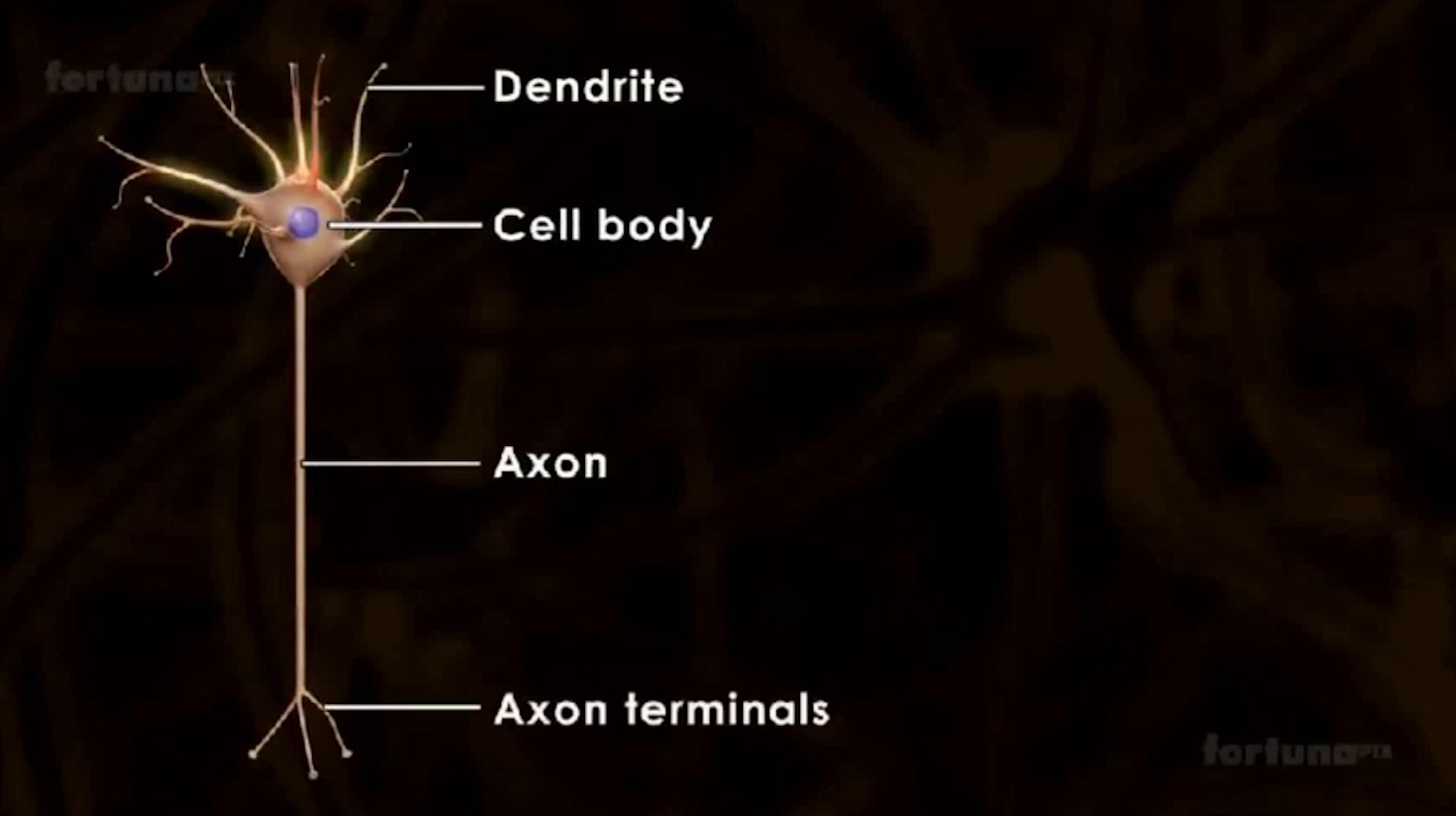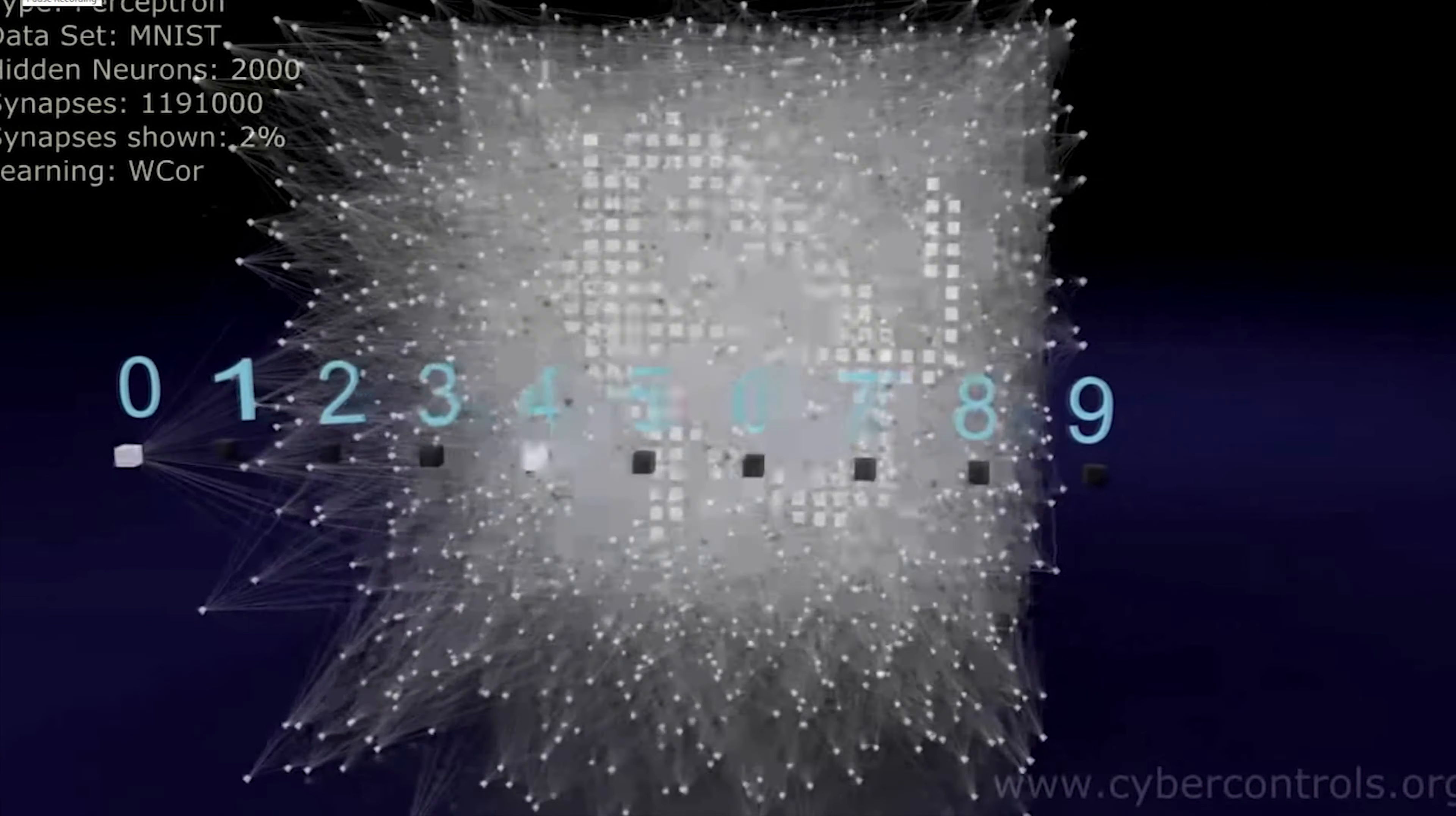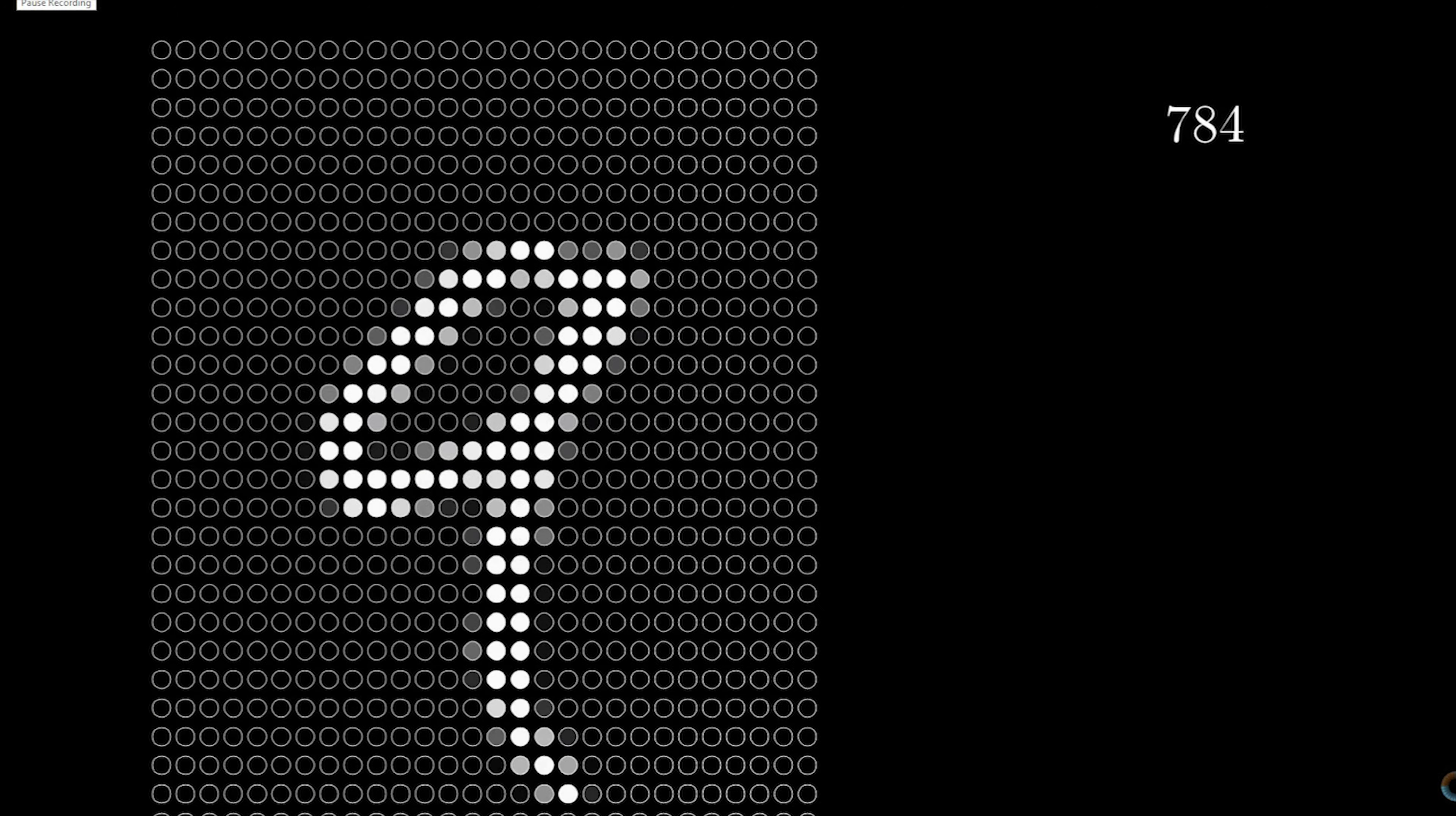A neural network is a network or circuit of neurons, or in a modern sense, an artificial neural network composed of artificial neurons or nodes. Thus a neural network is either a biological neural network made up of biological neurons, or an artificial neural network for solving artificial intelligence problems.